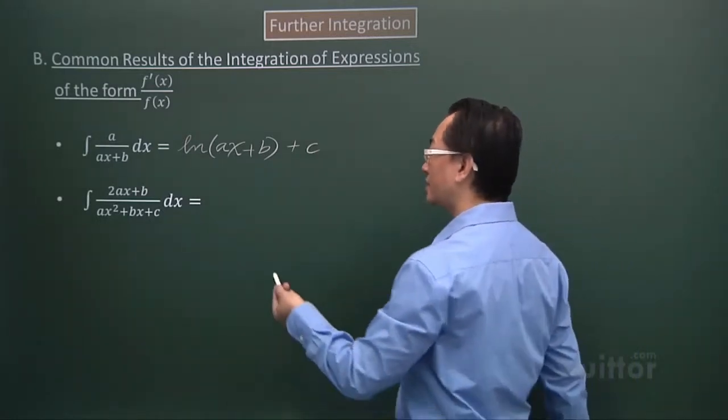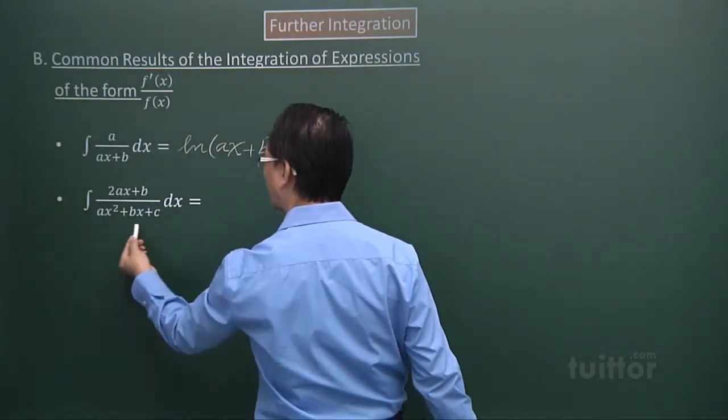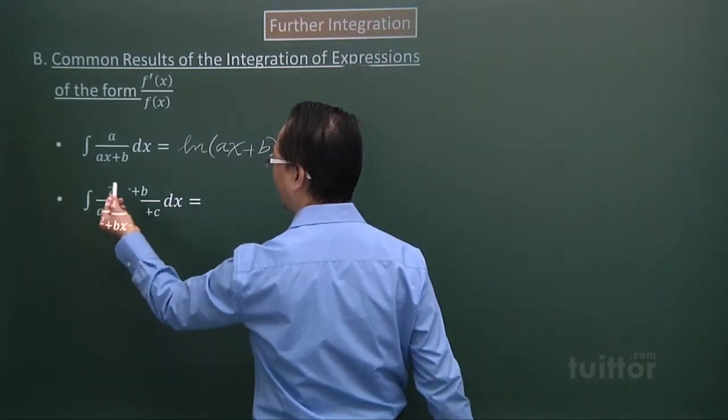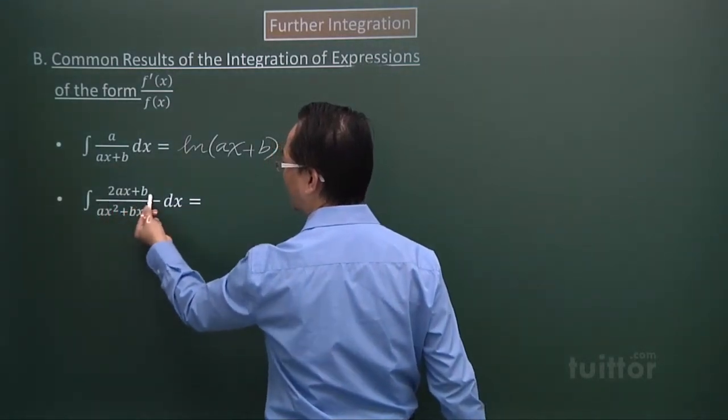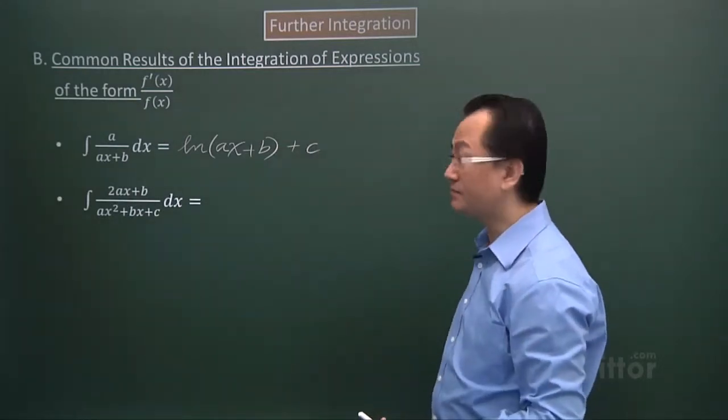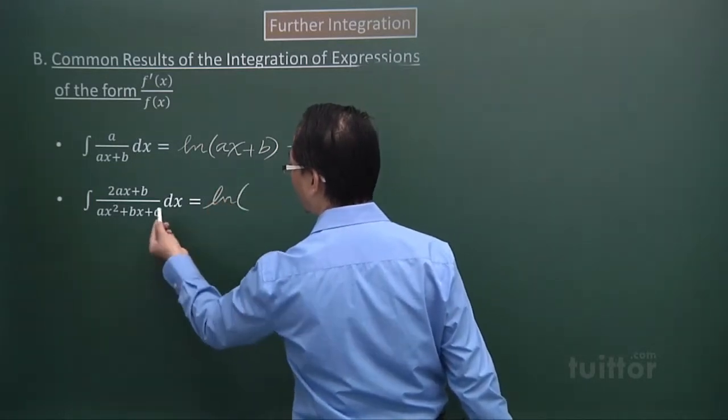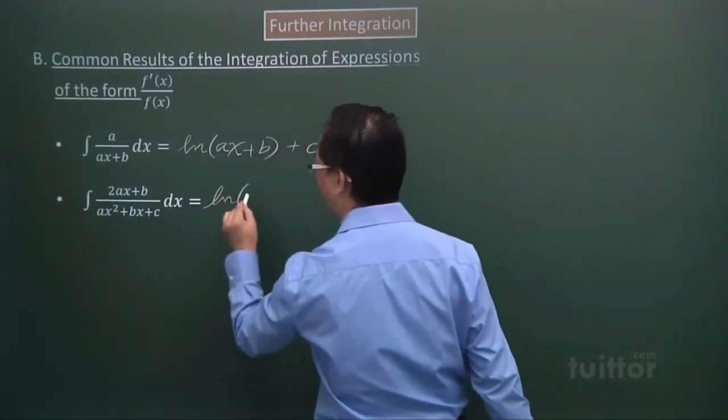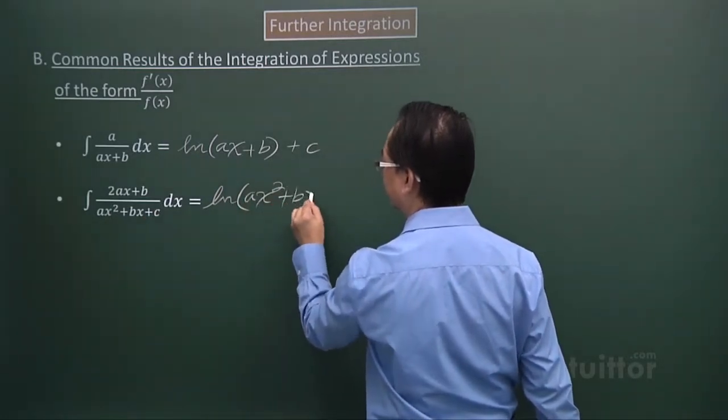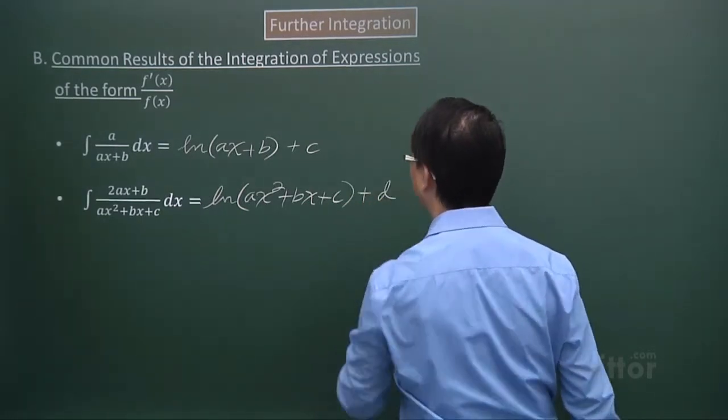Next is a fractional expression. And I look at the expression in the denominator. When I differentiate that, then I get 2ax + b, which is exactly what I have for the numerator. So the result will be ln, the denominator expression, plus the arbitrary constant.